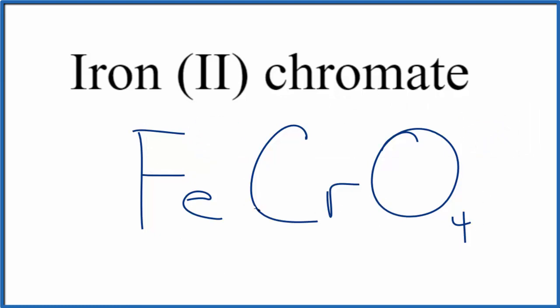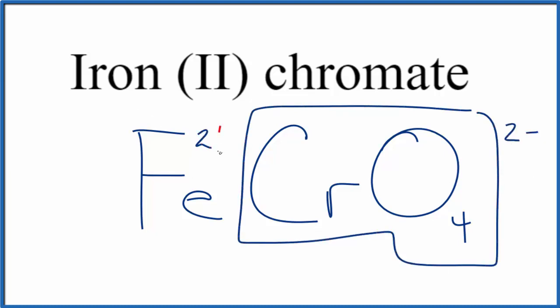If you were given the formula and asked to write the name, you'd need to know that the chromate ion, the CrO4, the whole thing here has a charge of 2-. Therefore, the iron would have to be 2+, you'd put the Roman numeral 2 to show that.